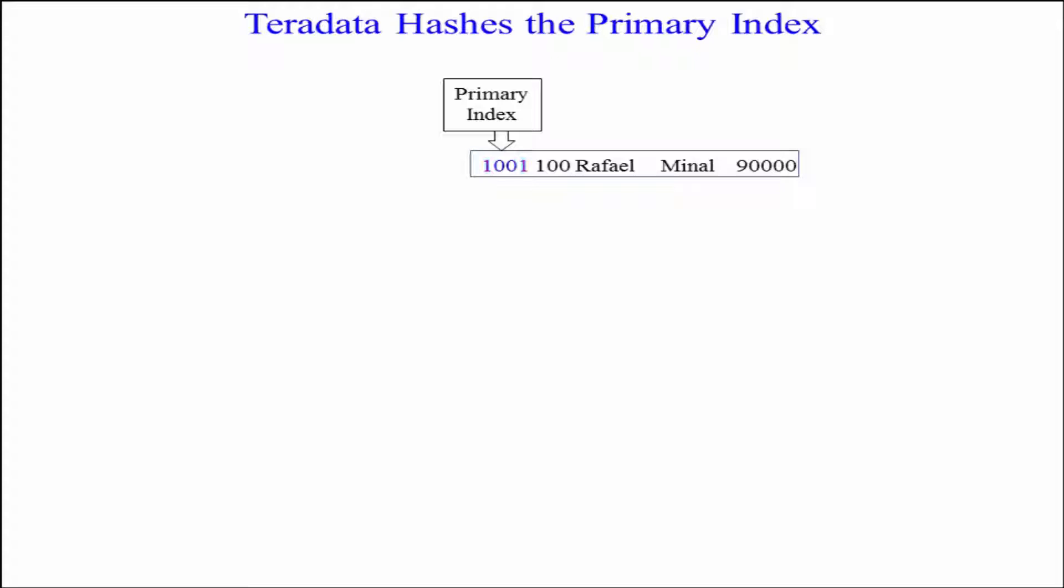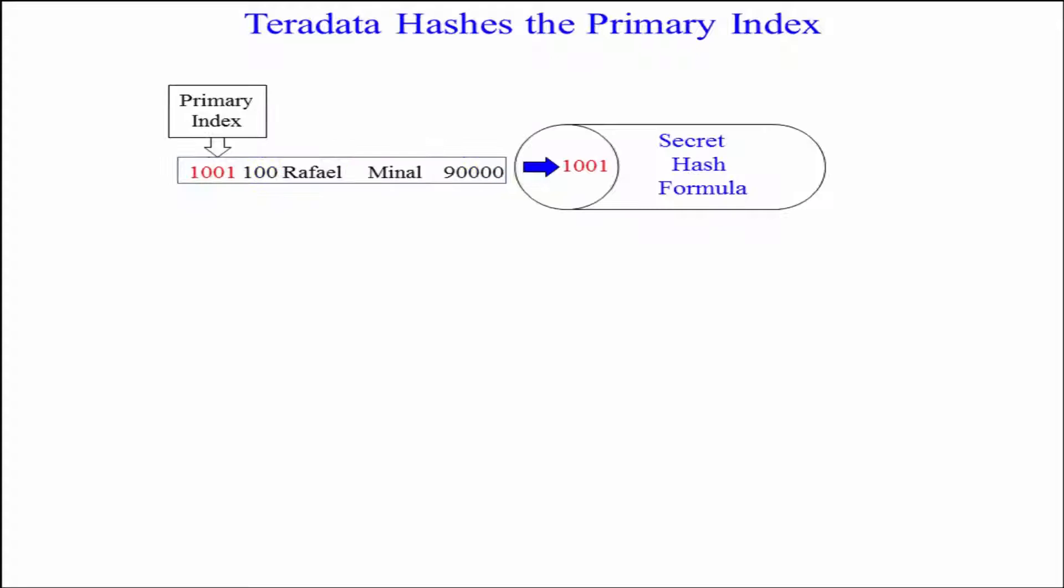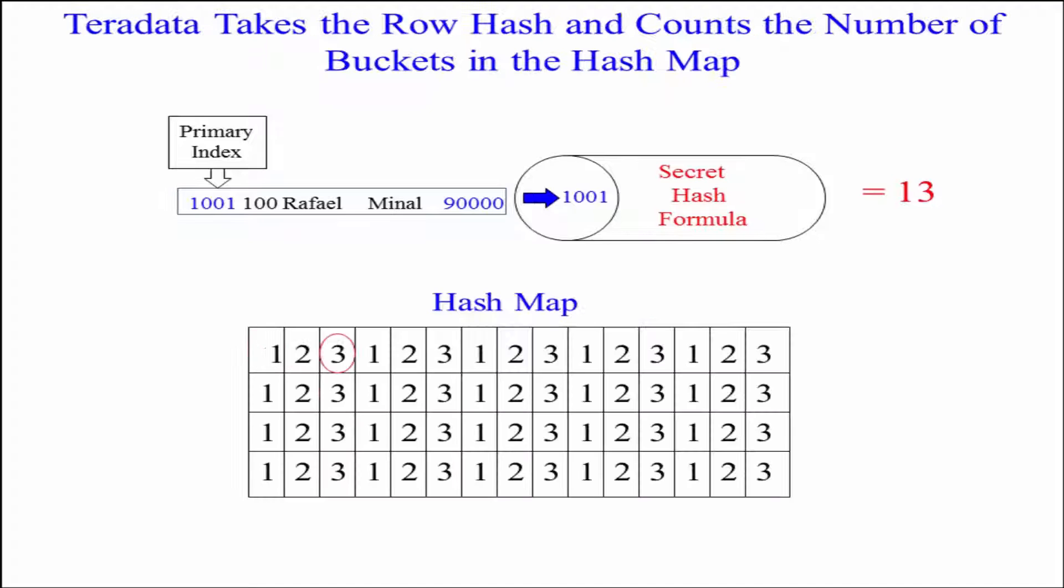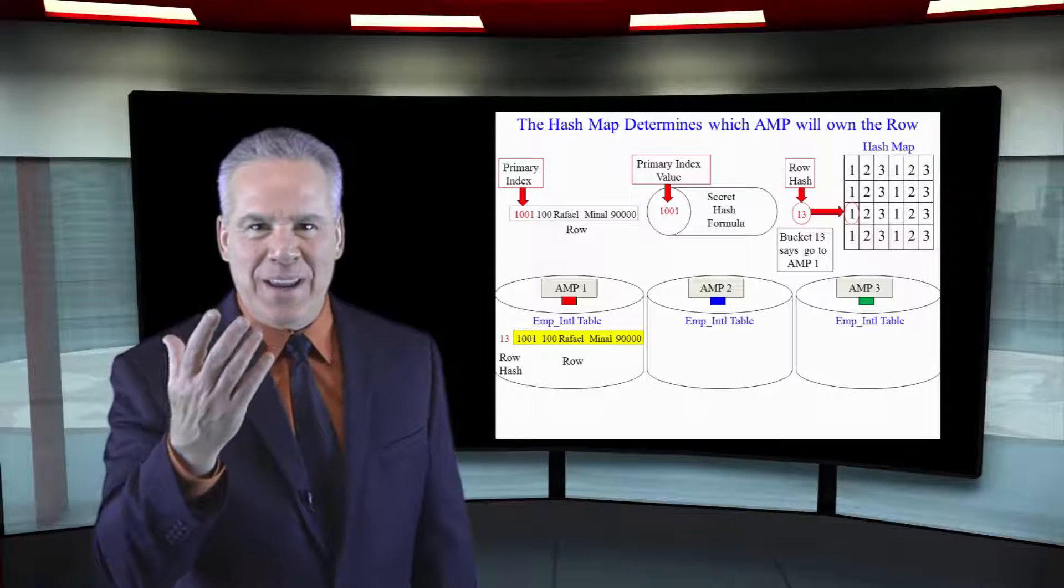Teradata hashes Rafael Manal's row, because the employee number is the primary index. 1001's hashed. That 13 is the row hash answer. They count over 13 buckets in that map, and they go, oh my goodness, that landed on this 13th bucket. What's in there? A 1. Rafael Manal is going to amp 1. Stay with me.